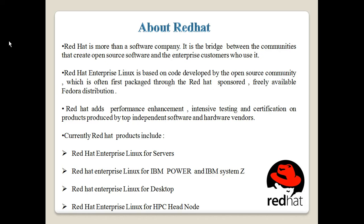What is Red Hat? Red Hat is basically a software company, but it is more than just a software company. It is actually the bridge between the communities that create open source software and the enterprise customers who use it. Linux Red Hat is an operating system that is open source, meaning the source code is publicly accessible and anyone can make changes to it and customize it. The open source community keeps on making customizations, researching, creating more efficient code, and adding or removing features. It is software produced by the open source community that has been branded by Red Hat.